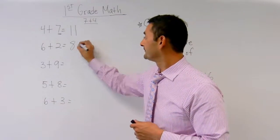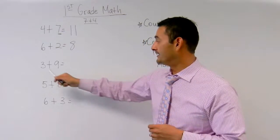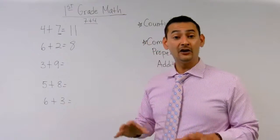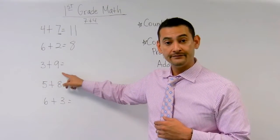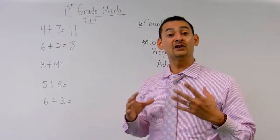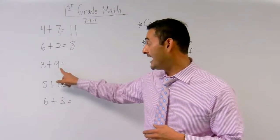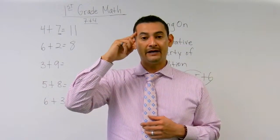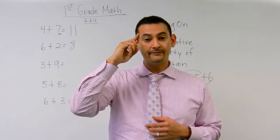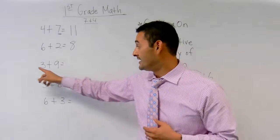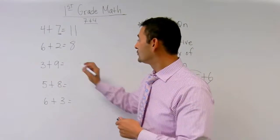Awesome. Now let's take a look at the next one. 3 plus 9 equals which one is the larger number? The 3 or the 9? The 9 is the larger number. So we're going to use 9 and then we're going to add three more. So let's put 9 in our head. Ready? 9, 10, 11, 12. Awesome. 3 plus 9 equals 12.